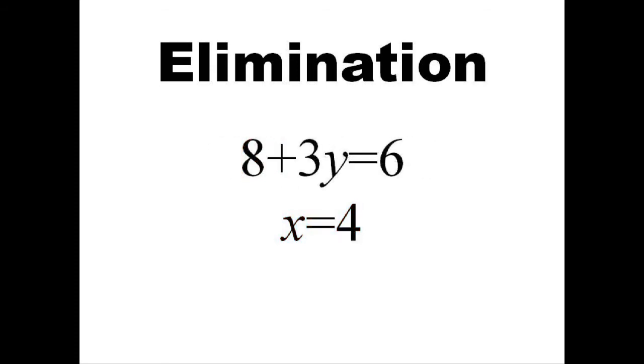That means 8 plus 3y equals 6. Subtract 8 from both sides to get negative 2, and divide 3 on both sides to get y equals negative 2 thirds.